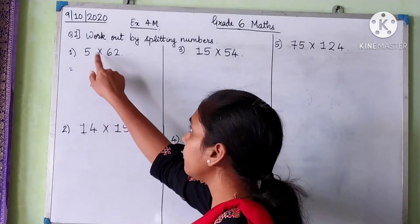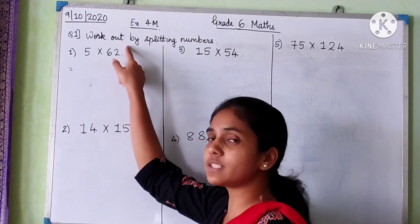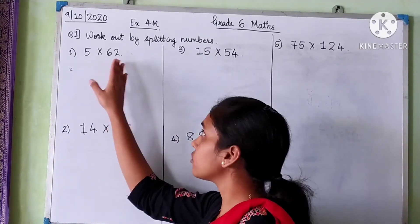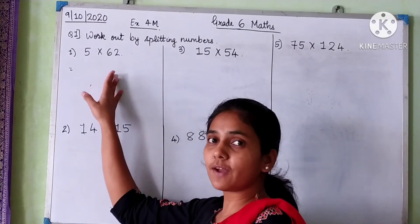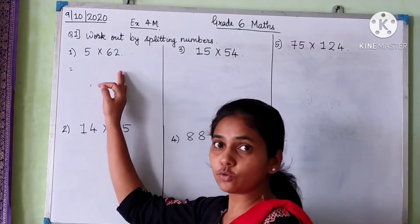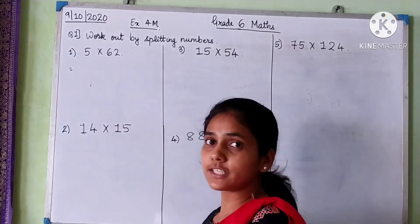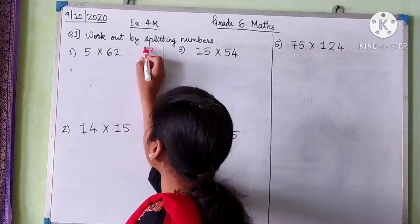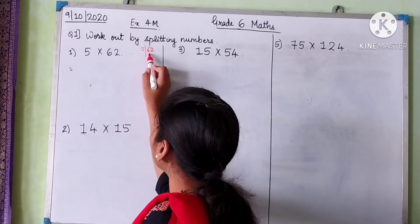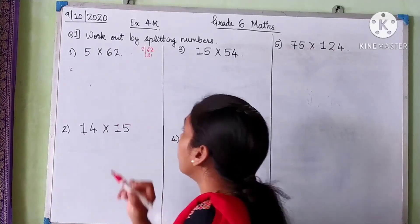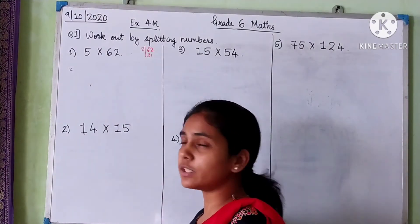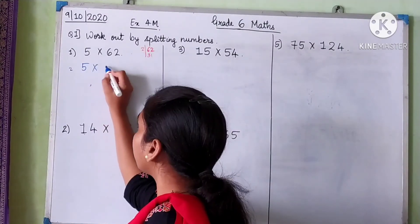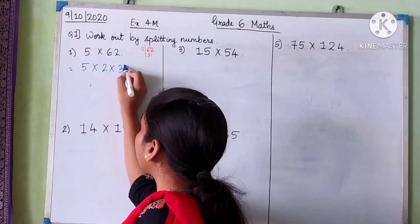The first one is 5 multiplied by 62. 62 is a greater number, so you can split it into its factors. What are the factors of 62? Start dividing by 2: 2 into 31 is 62. So we get 2 multiplied by 31 equals 62. So I split 62 into 2 and 31, giving us 5 × 2 × 31.